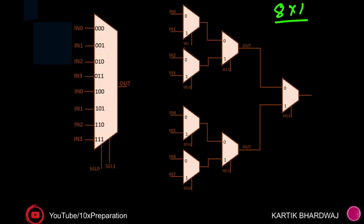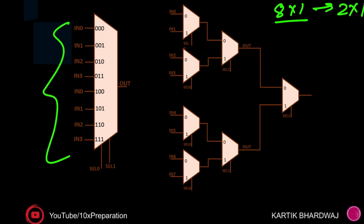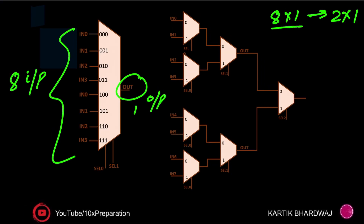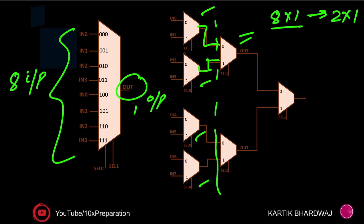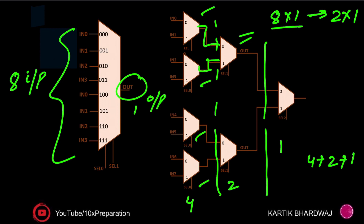Let's take an 8x1 MUX and build it using 2x1 MUXes. There are 8 inputs and 1 output. For 8 inputs, you need 4 MUXes at the first level. The outputs of those 4 MUXes feed into the second level, which has 2 MUXes. Those 2 outputs then feed into 1 final MUX. So: first level 4, second level 2, third level 1 — that gives 7 MUXes required.